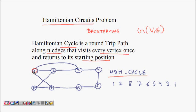For example, a Hamiltonian cycle for an 8-node graph: start at node 1, go to 2, then 8, then 7, then 6, then 5, then 4, then 3, and back to 1. That uses 8 edges, and all eight nodes are covered. This is an example of a Hamiltonian cycle.